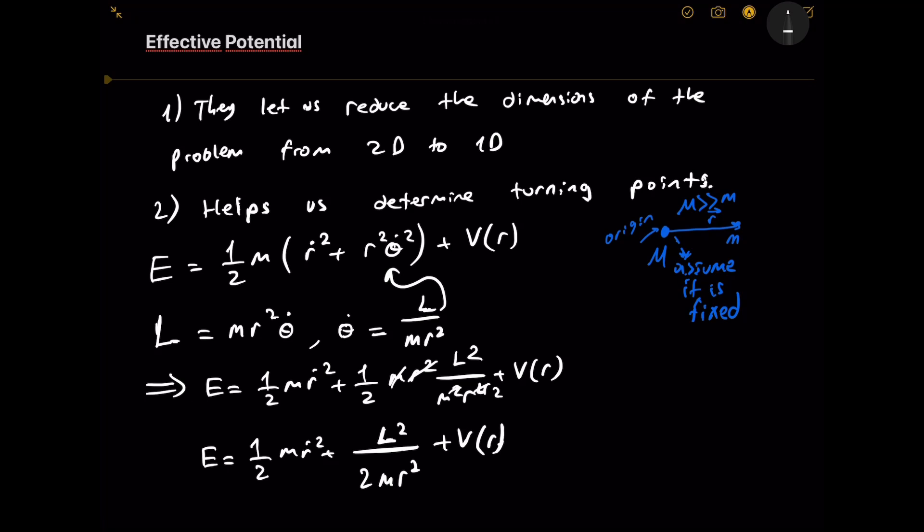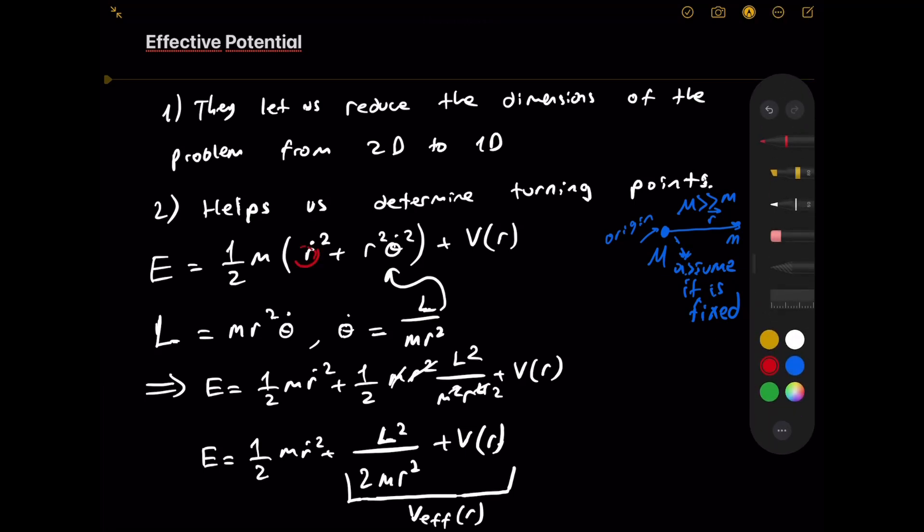And this is called the effective potential. That is the definition of it. Now what did I mean when I said we reduce the two dimensions to one dimension? Well look at this. Here we had r and theta, but at the end we only have r here. We only have r, so we were able to get rid of the theta and we are only left with one variable, the position. So that is a one-dimensional problem. That's what I meant by the first statement.